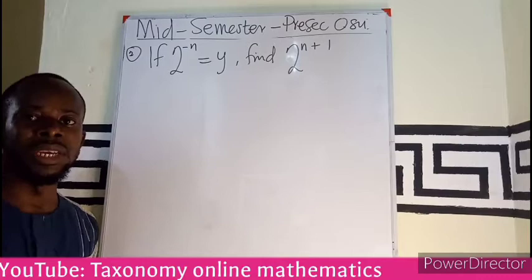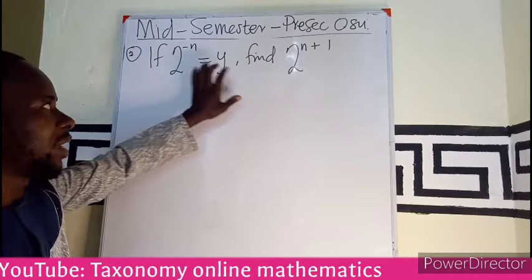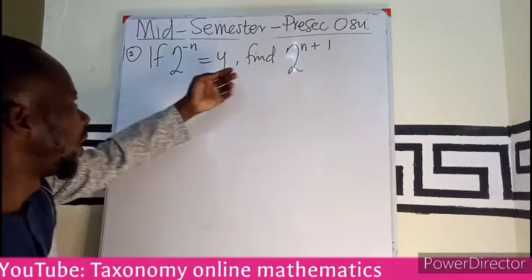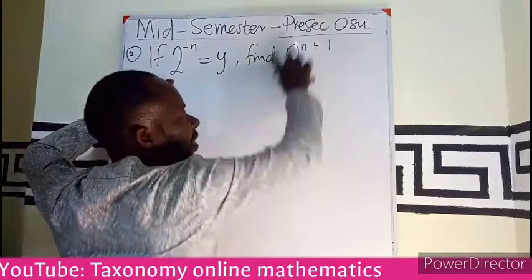If 2 exponent minus n equals y, we have to find the value of 2 exponent n plus 1. So this is what we are asked to find, meaning we need to find this to be equal to values of y. Because this is equal to y, anything in this area will also give us y minus something, plus something, or times any value.